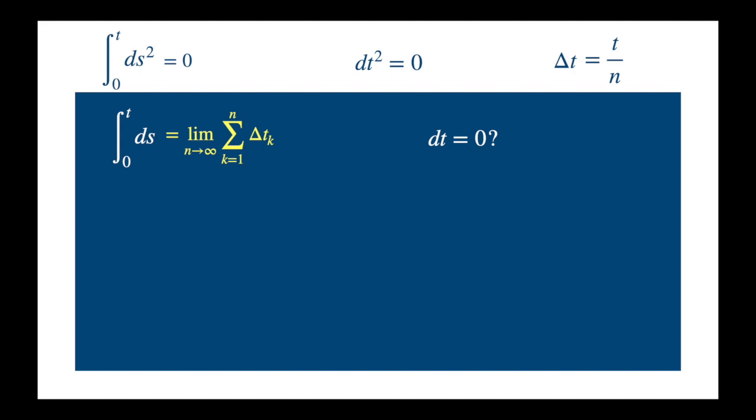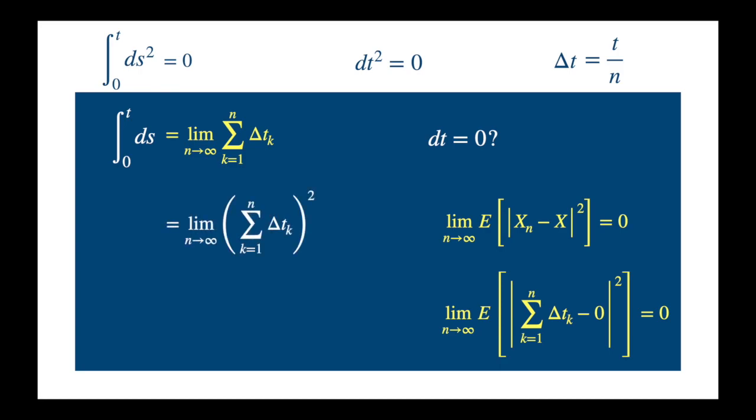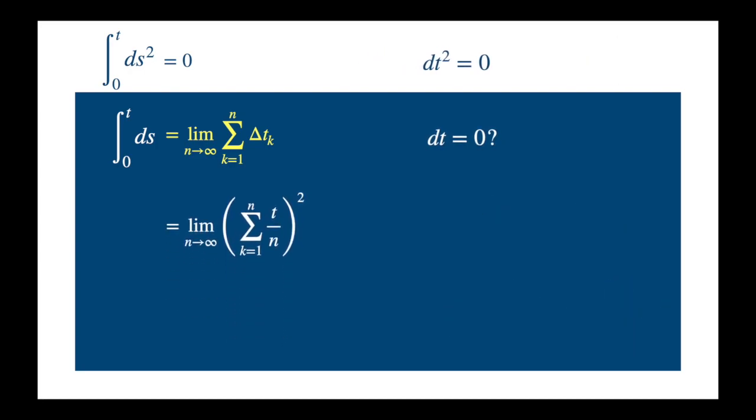Let's recall the definition of the mean square convergence. So we replace x_n by the sum of delta t. And if we want to test whether this goes to 0, then of course we replace x by 0. We have our definition of the limit. Next we replace delta t by t over n. t over n summed n times is just n times t over n.